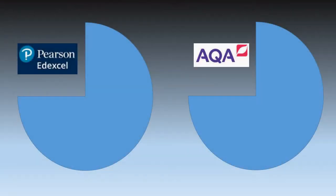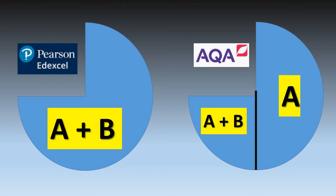The first thing we need to think about is what we actually need to do in the exam. So if you're a Pearson Edexcel candidate or an AQA candidate, you have about 45 minutes in the exam to respond to your unseen poetry section. If you are Pearson Edexcel, what you're asked to do is compare poem A to poem B — so you're given two poems and you've got 45 minutes, one question asking you to compare them.